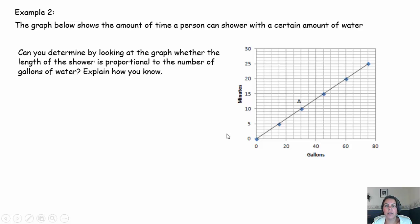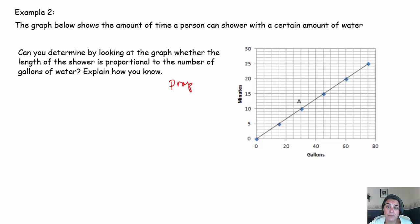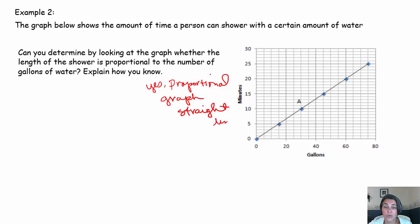This graph shows the amount of time a person can shower with a certain amount of water. Can you determine by looking at the graph whether the length of the shower is proportional to the number of gallons of water? Just by looking at this graph, I know this is proportional — because the graph is a straight line through the origin.